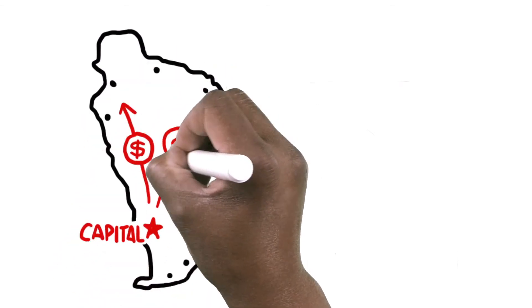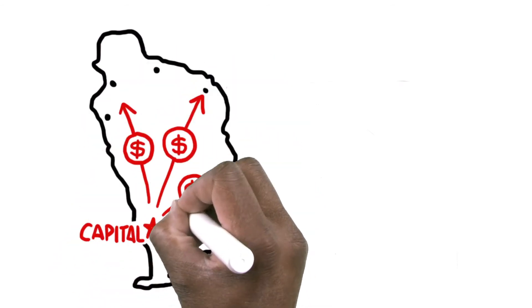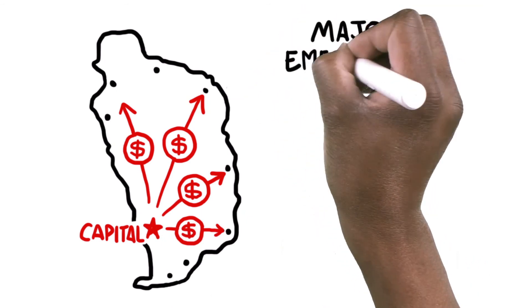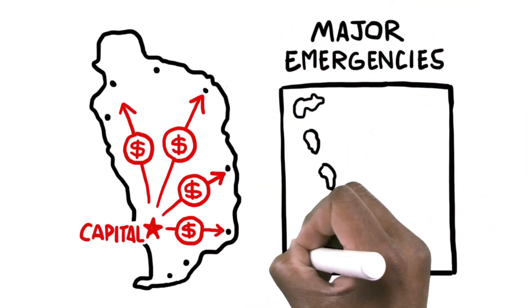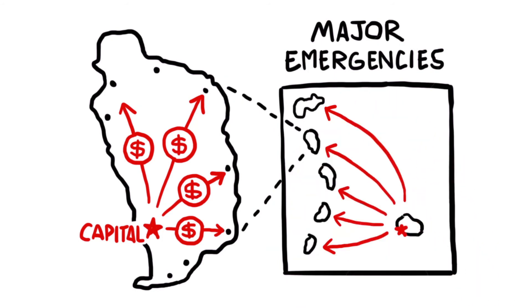National governments should hold reserve funds that can be released before small-scale emergencies. But for the major emergencies, governments may have to call on regional institutions and funds for support.